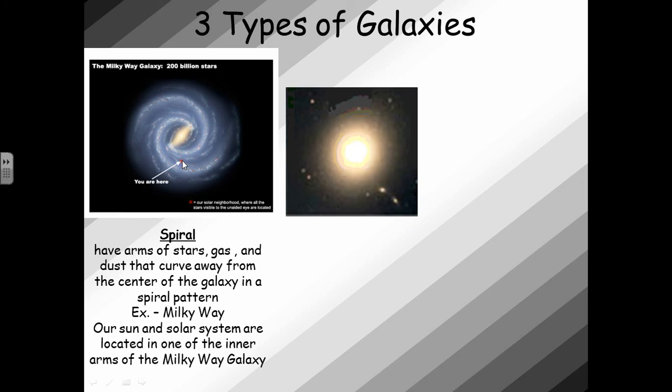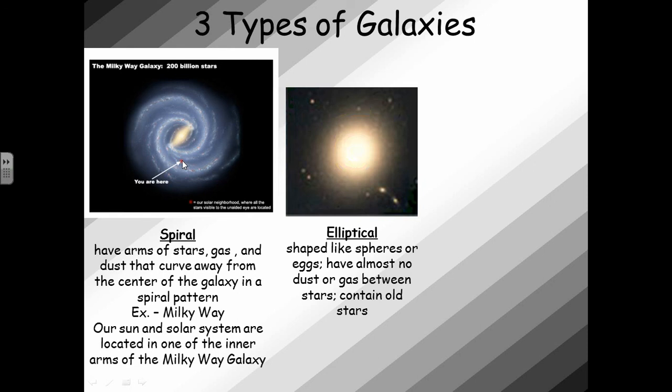Another type of galaxy is the elliptical galaxy, which is shaped like a sphere or an egg, and has almost no dust or gas between stars. This type of galaxy contains old stars.